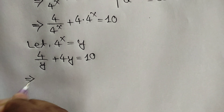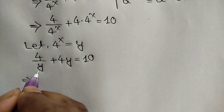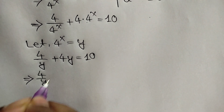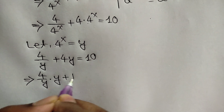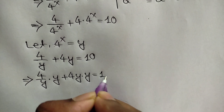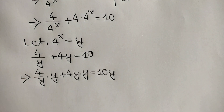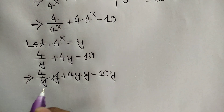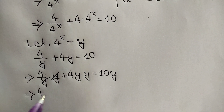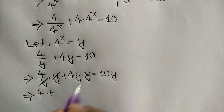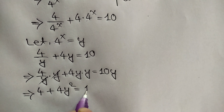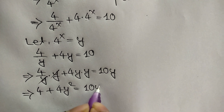Multiplying both sides by y, we can write 4 over y times y plus 4y times y is equal to 10y. This y cancels out this y, so we are left with 4 plus 4y squared is equal to 10y.